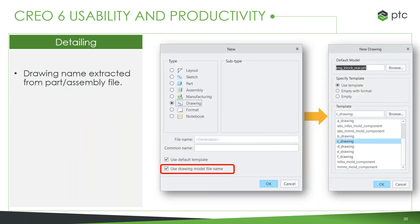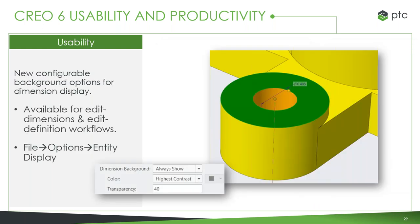For detailing, something that has been highly requested: we now have the option to have the drawing name automatically match the model name whenever you start a drawing. This keeps everything organized and cuts out any confusion with file names — and if you don't want this, it's simply a checkbox to leave unchecked. We also now have the option to alter your dimension backgrounds and style. Creo picks settings that work for most people, but if you want to change this for personal preference or part color reasons, you can do that.